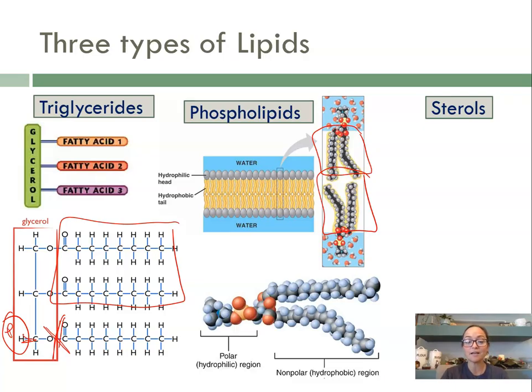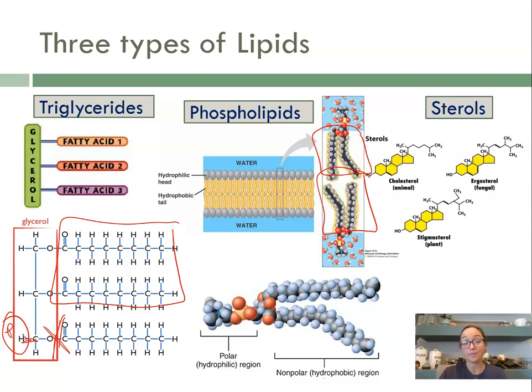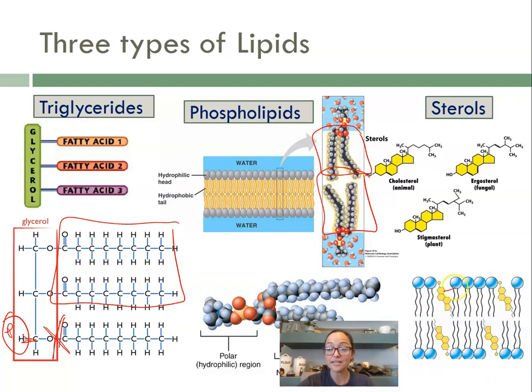The third type of lipid are sterols. Sterols include cholesterol in cell membranes, as well as your steroid hormones like testosterone or estrogen, and your vitamins like your lipid-soluble vitamins.